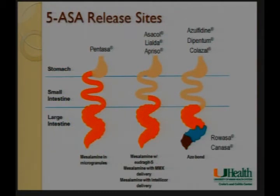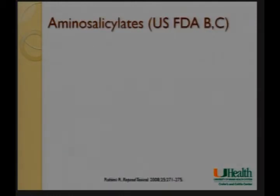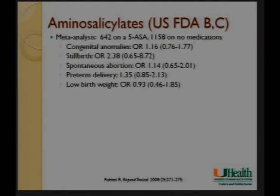These are the brand names for the different mesalamine therapies in America. Mesalamine can be released in different ways — micro granules with time-dependent release (Pentasa), different coatings releasing in the terminal ileum and colon, or an azo bond releasing exclusively in the colon. Also available rectally. The mesalamines are FDA class B and C — mostly class B. A meta-analysis of 650 patients on mesalamines versus almost twice as many controls showed no statistically significant increase in any negative outcomes.